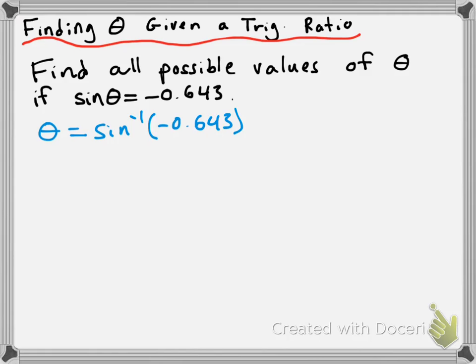So the answer that is going to be given to us here is almost certainly not going to be the correct answer, and we're going to have to make adjustments. But it will be enough to get us in the right direction. So when we take the sine inverse of negative 0.643, we get negative 40 degrees.